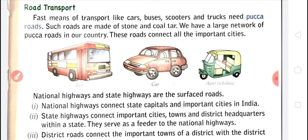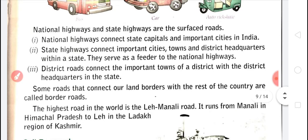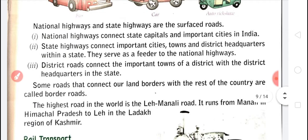Roads are made up of stone and tar. National highways connect the state capitals and important cities. State highways connect cities, towns, and district headquarters. District roads connect the towns of the district.